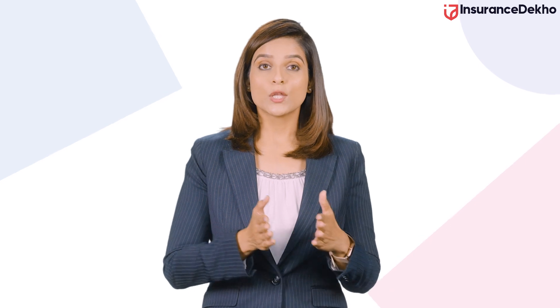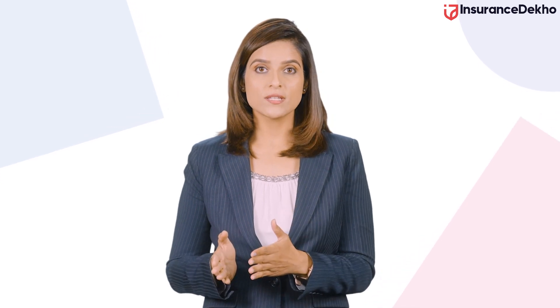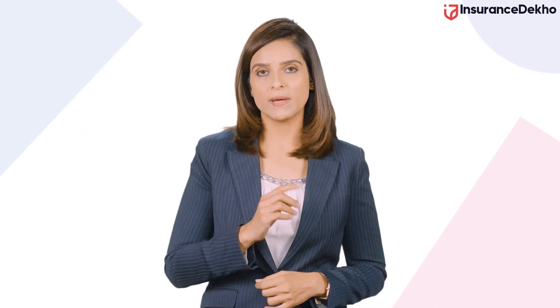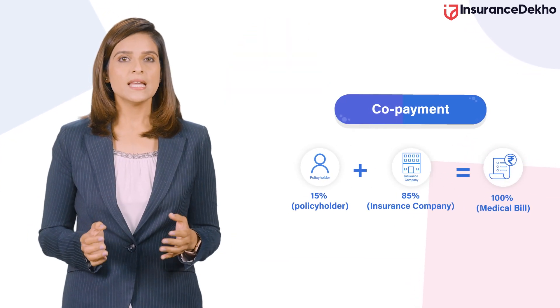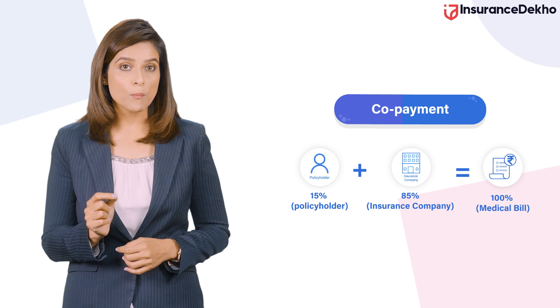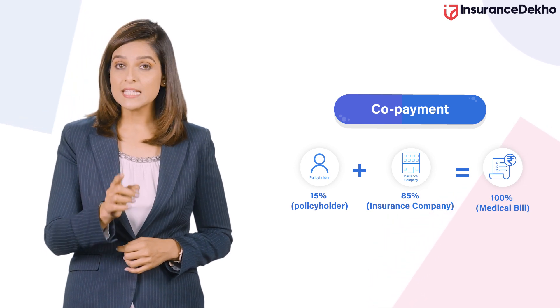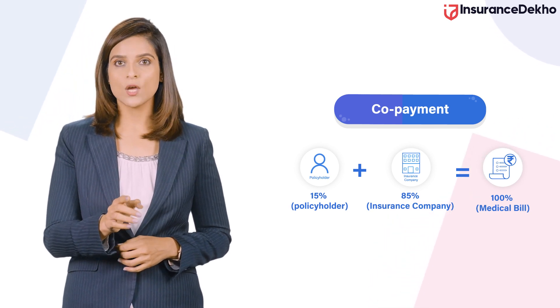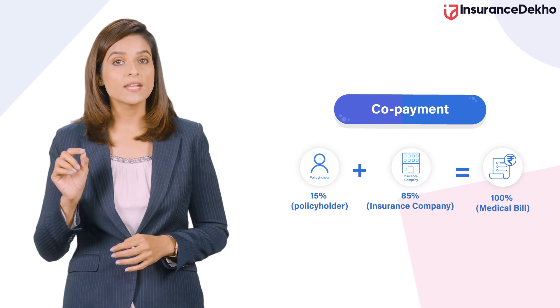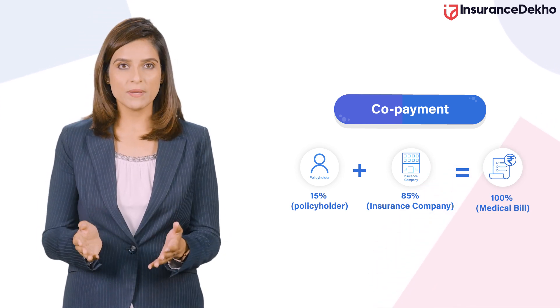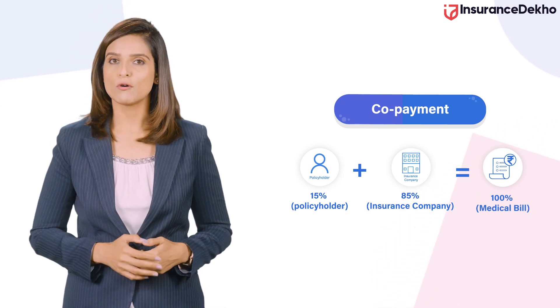On the other hand, the copayment clause says that you need to pay a fixed percentage or ratio of your medical bill instead of a fixed sum. For example, if you have a copayment clause of 15%, you need to pay 15% of the total medical bill on every claim. The rest of the amount will be covered by the insurance company.